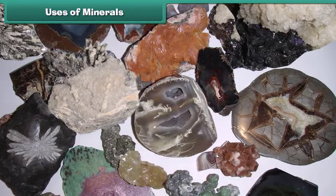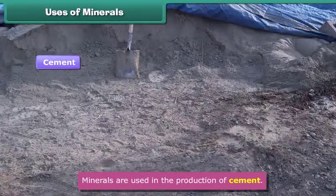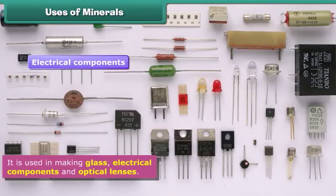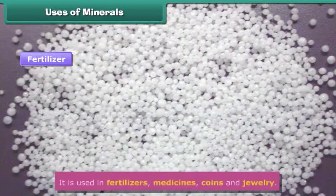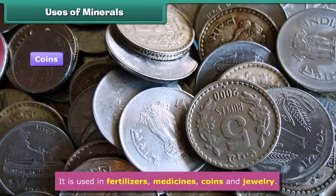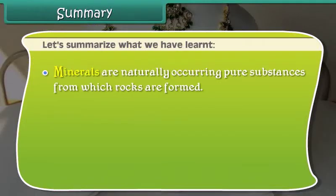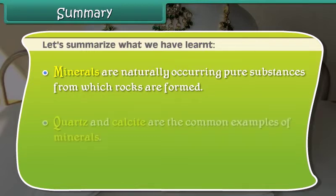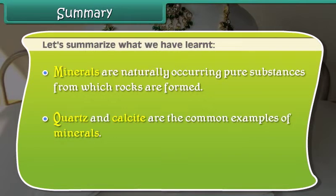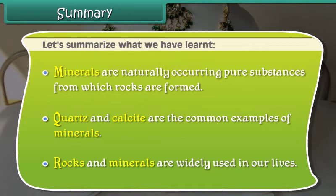Uses of minerals: Minerals play an important role in our lives. Minerals are used in the production of cement. They are used in making glass, electrical components, and optical lenses. These are also used in fertilizers, medicines, coins, and jewelry. Minerals are naturally occurring pure substances from which rocks are formed. Quartz and calcite are the common examples of minerals. Minerals are widely used in our lives.